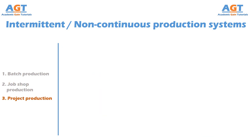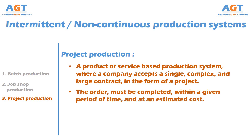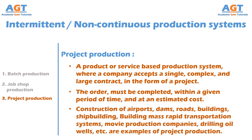The last type of production system we will discuss is project production. This is a product or service based production system where a company accepts a single, complex, and large contract in the form of a project at a time. The order must be completed within a given period of time and at an estimated cost. Examples of project production include construction of airports, dams, roads, buildings, shipbuilding, building mass rapid transportation systems, movie production companies, and drilling oil wells.